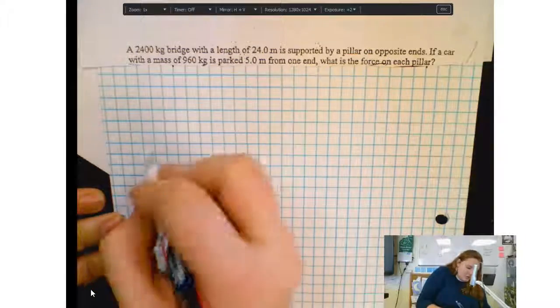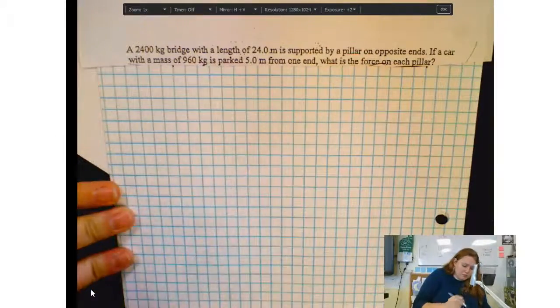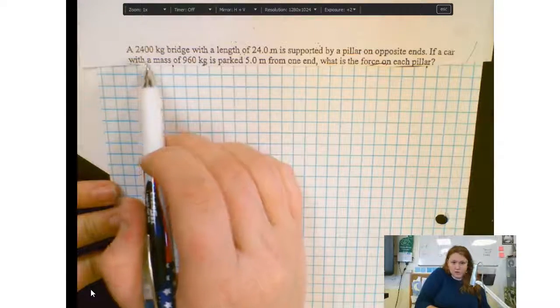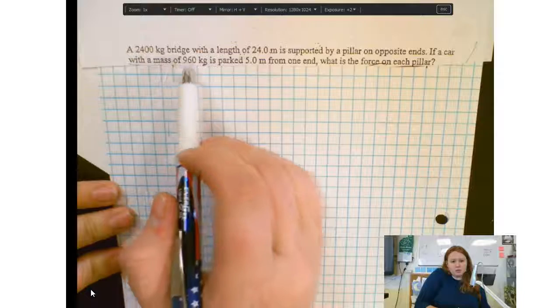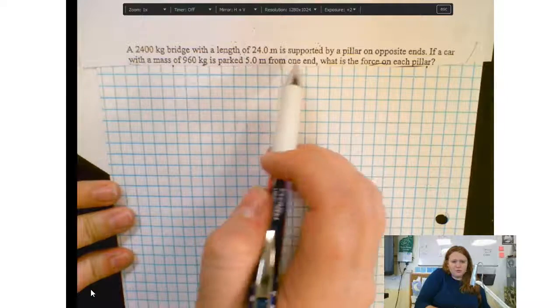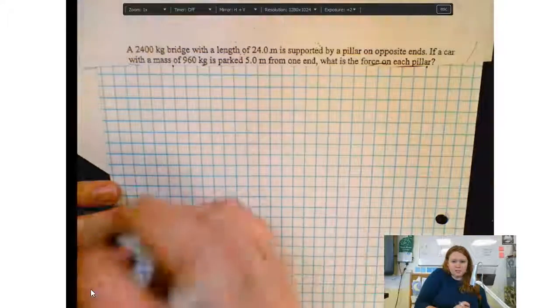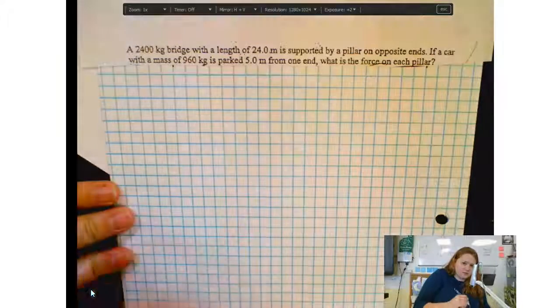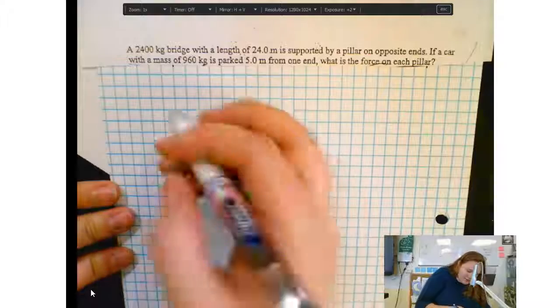Okay, so a couple of you wanted me to do the bridge problems and put on canvas. So here we go. This is the first one. We have a 2,400 kilogram bridge with a length of 24 meters. It's supported by a pillar on opposite ends. If a car with a mass of 960 kilograms is parked 5 meters from one end, what is the force on each pillar?